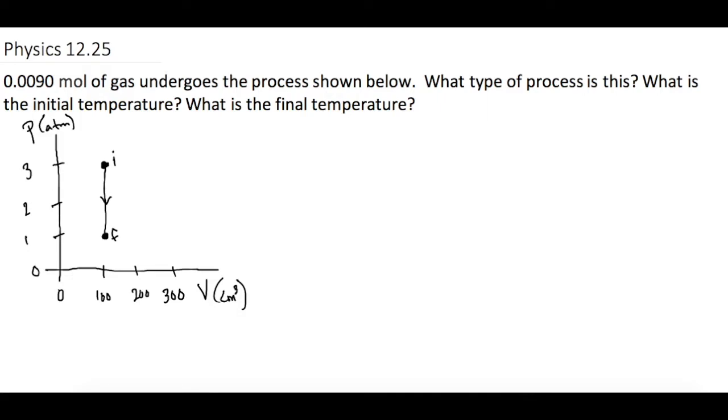0.009 moles of gas undergoes the process shown below. What type of process is this? And then what is initial temperature? And what is the final temperature? So first off, on what process this is, let's look at the picture right here. So the pressure is changing from three atmospheres down to one atmosphere, but the volume is staying right at 100 cubic centimeters.